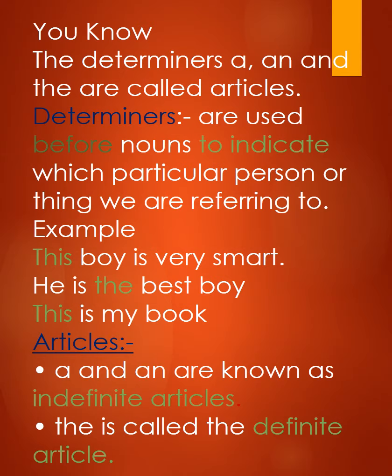A, An, and The ko hum further categorize karte hain. A aur An ko hum Indefinite Articles kehte hain, aur The is called the Definite Article. Jab hum koi general statement dete hain, kisi bhi general cheez ko refer karne ke liye hum A ya An use karte hain. Jab hum kisi particular cheez ko particularize karne ki koshish karte hain, toh hum Definite Article 'The' ka use karte hain.